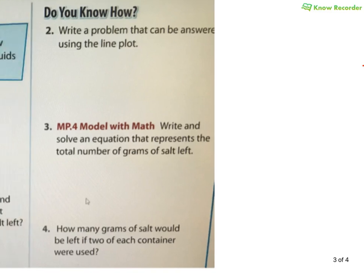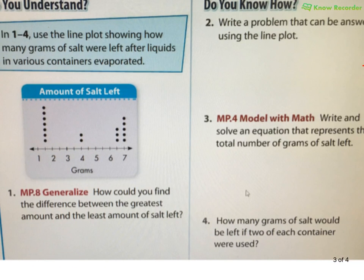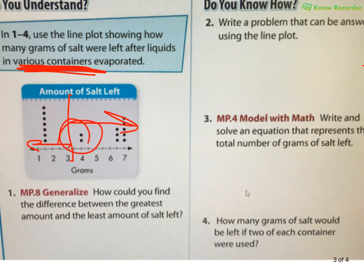So, write a problem that can be answered using a line plot. So, I'm going to look at what I have. I could use anything. What is the total amount of salt left? How many containers? Because you got to make sure you read your boxes. We're talking about containers here, right? So, I can say, hey, how many containers have less than four grams of salt? How many containers have four or more grams of salt? You could think of anything that relates to this graph. All you have to do is think. And then use whatever comes to your head. And make sure it makes sense. Notice I stumbled and it took me a second because I wanted to formulate my sentence correctly in my head. It's good to take that extra second to think.